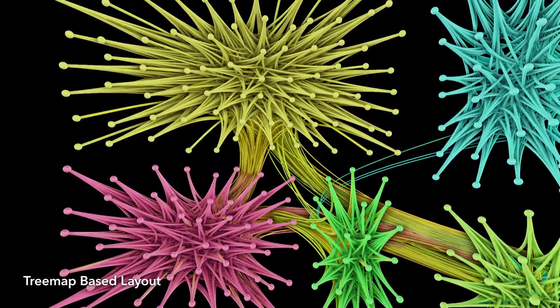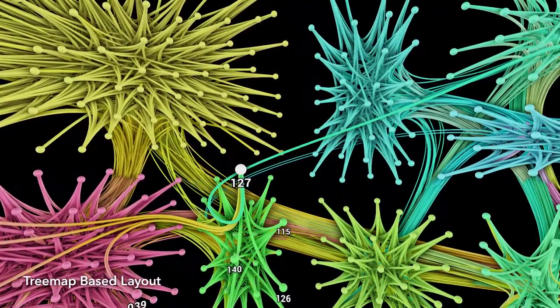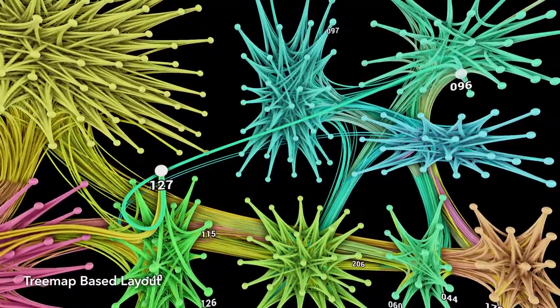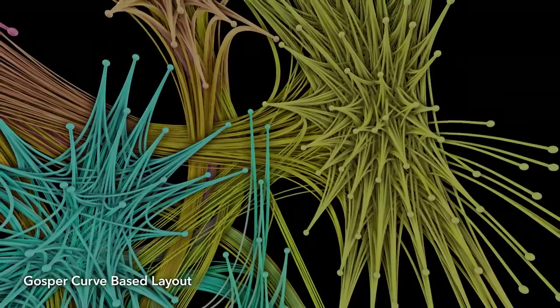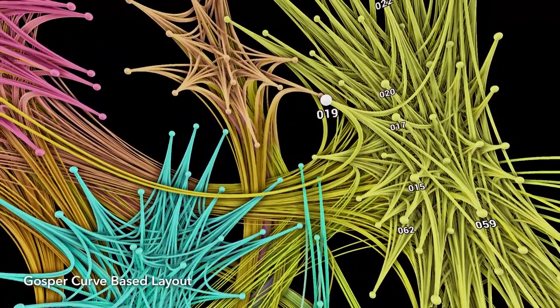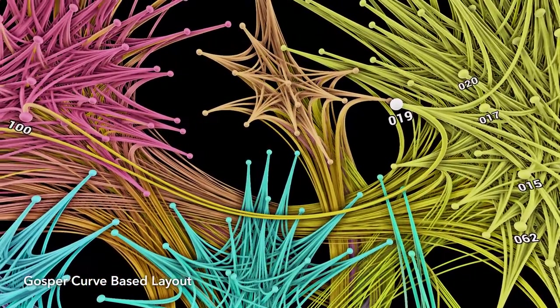Rectangular layouts such as the treemap layout are generally limited to a small FOV, as spherical mapping causes strong distortions in the corners. More circular layouts such as the Gosper layout can map effectively to an entire hemisphere.